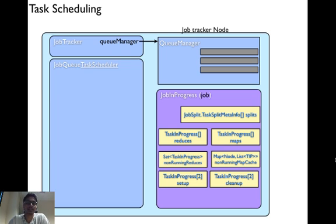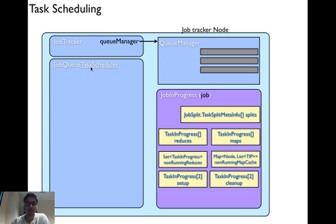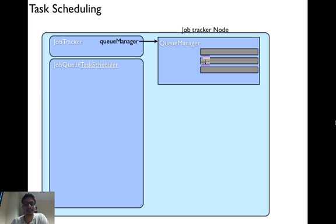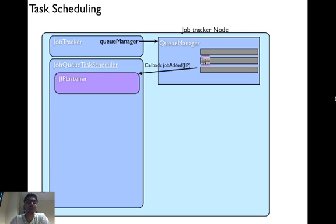Let's look at the JobQ task scheduler in more detail. Since it extends the task scheduler abstract class, it has to implement all its methods, in particular AssignedTask. As we saw in job submission, as a job is added inside the queue, the queue manager notifies all its listeners. One such listener is inside the JobQ task scheduler, so it receives a callback method called JobAdded. The JobInProgressBase internally maintains a mirror data structure of this queue and updates it when it receives that callback.